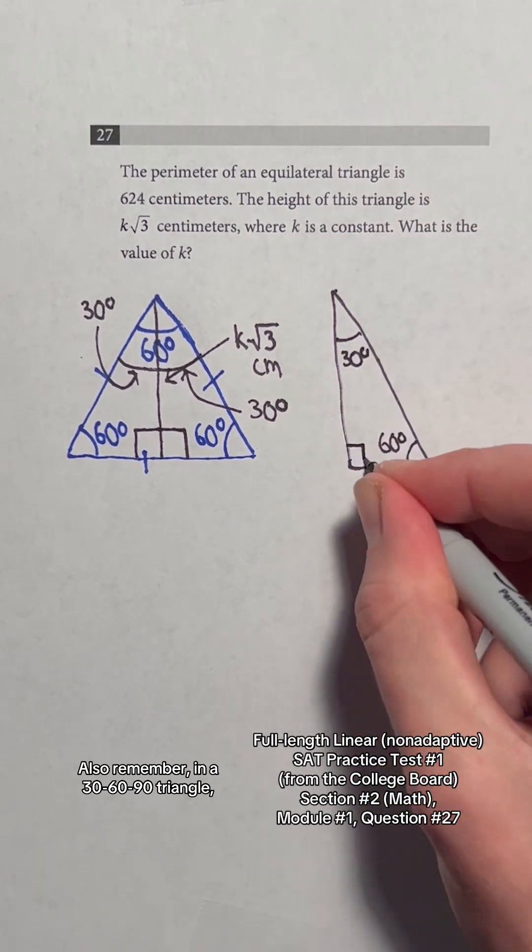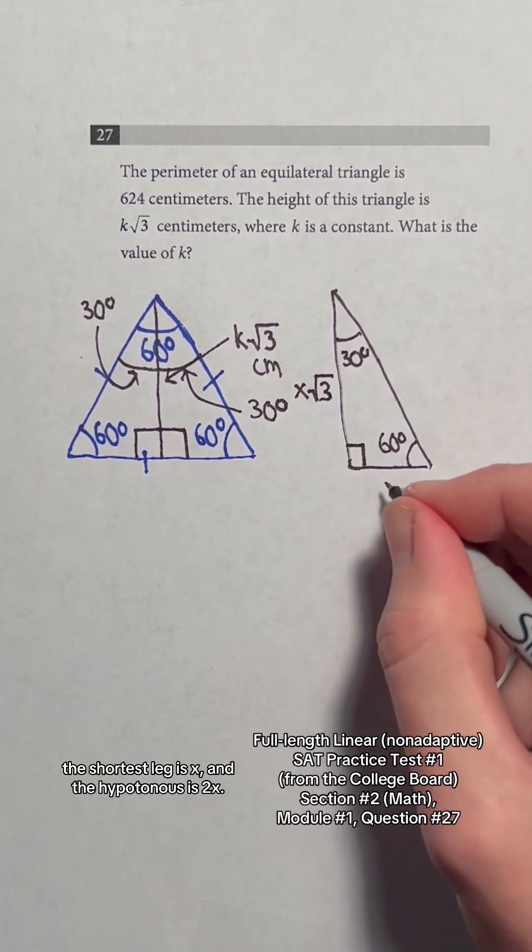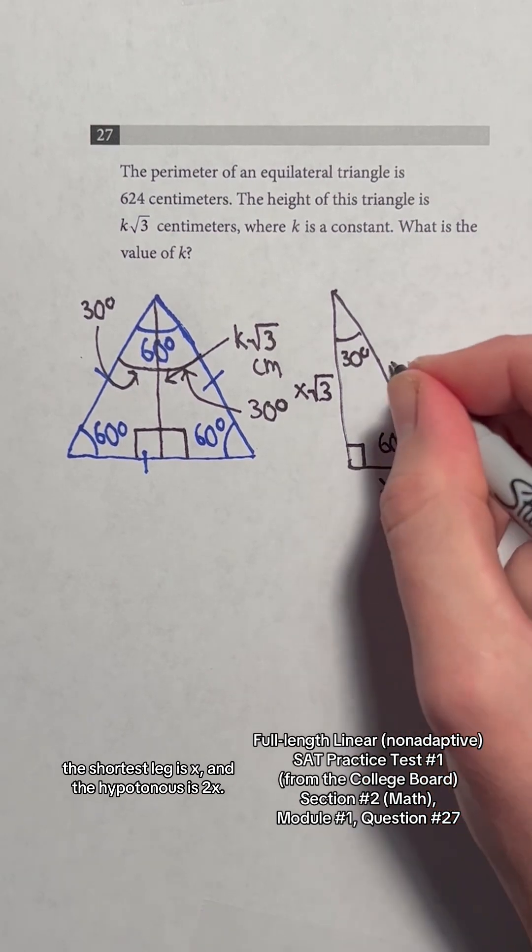Also remember, in a 30-60-90 triangle, the longest leg is x times the square root of 3, the shortest leg is x, and the hypotenuse is 2x.